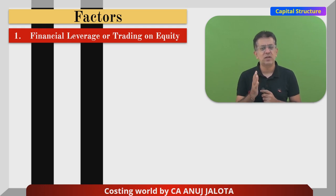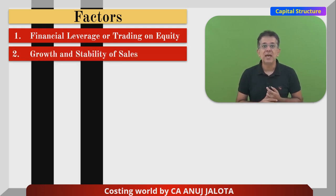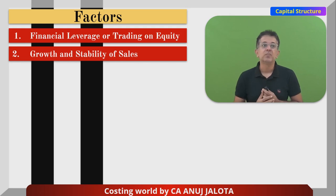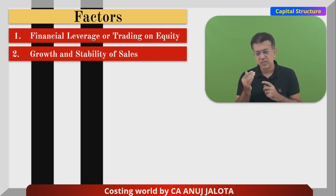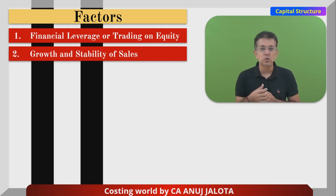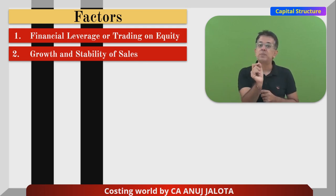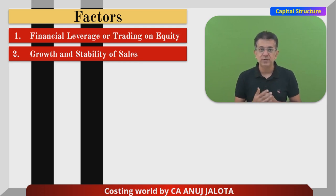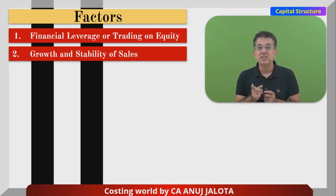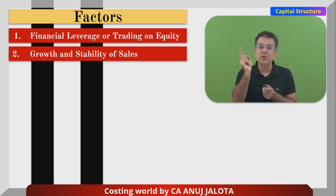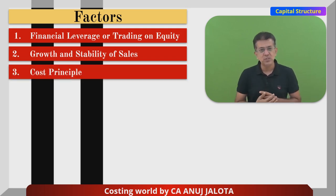Growth and stability of sales — if your sales are doing good with a certain pattern of growth, inflows will come from your sales and you'll be able to pay off debt each and every year. Remember, debt is cheaper than equity. In any cost of capital question, Kd is always cheaper than Ke. So if there is stability of sales, companies prefer raising more debt than equity to enjoy the benefits of trading on equity.